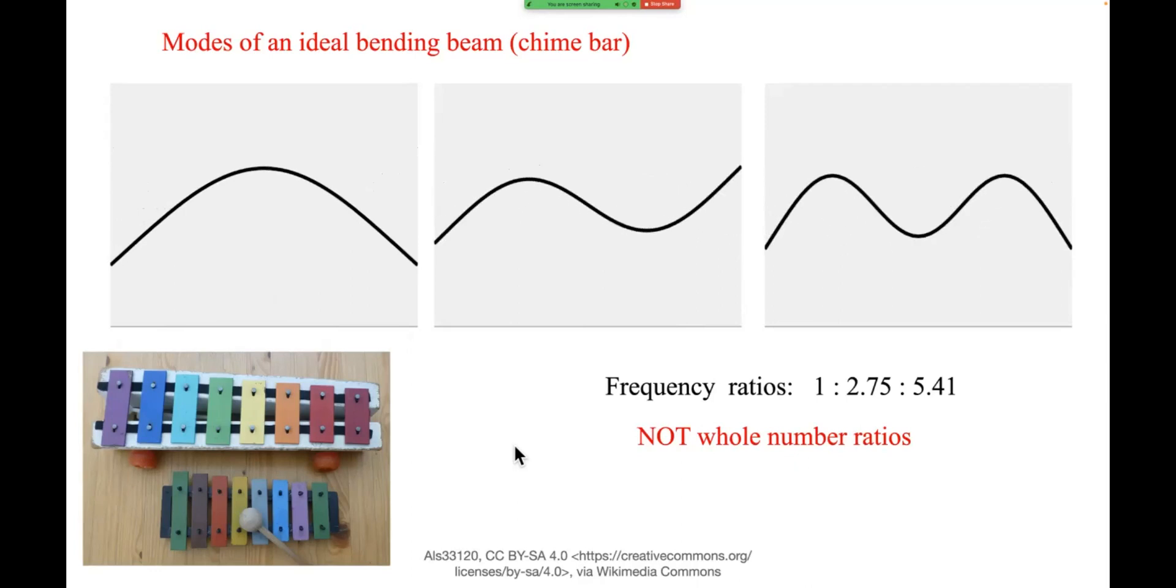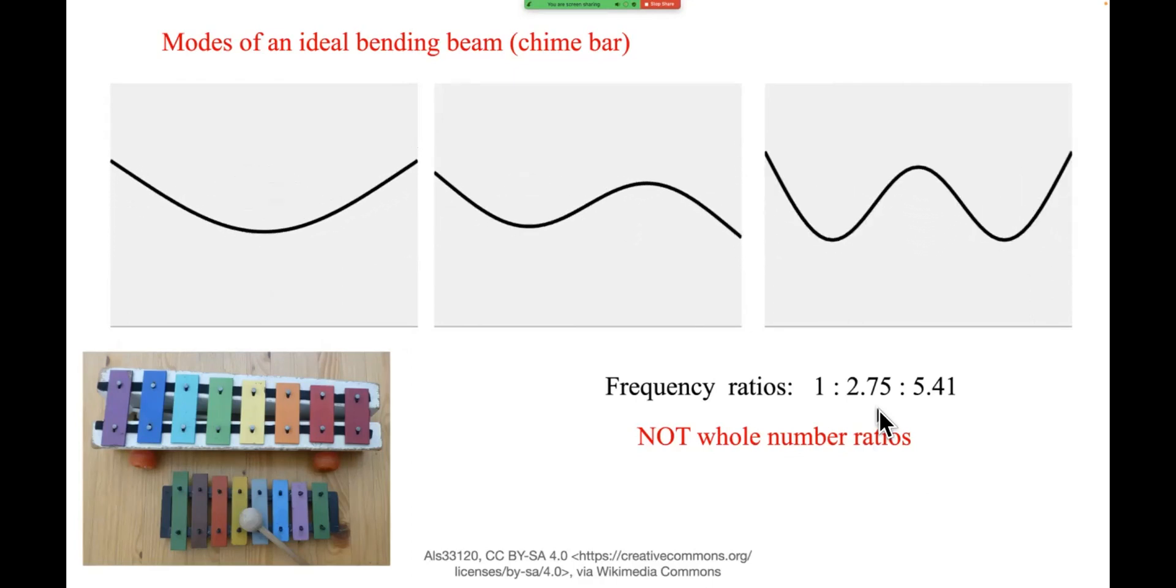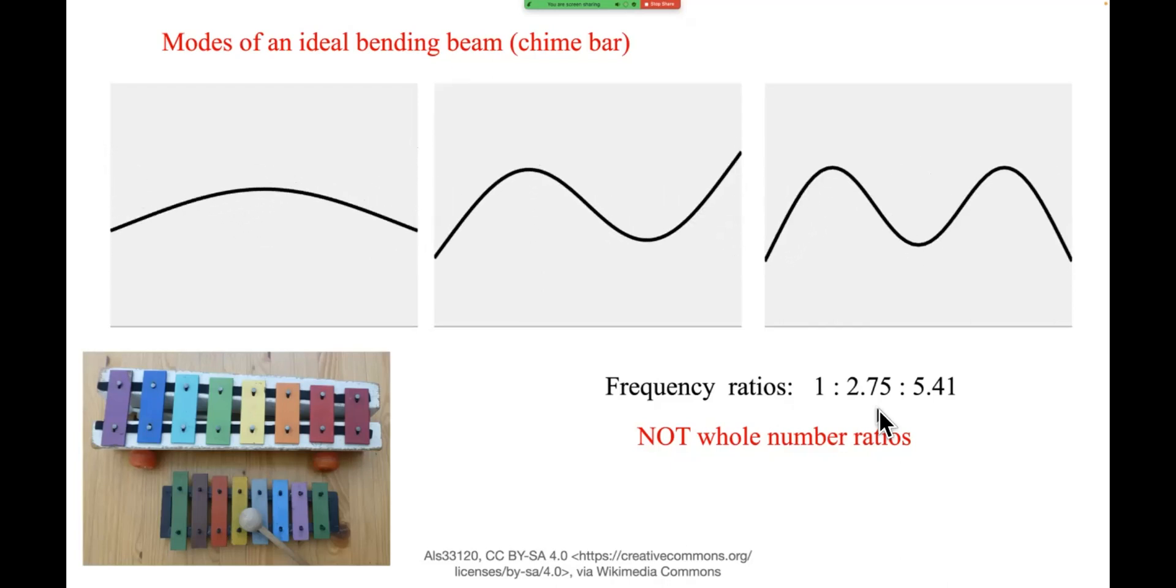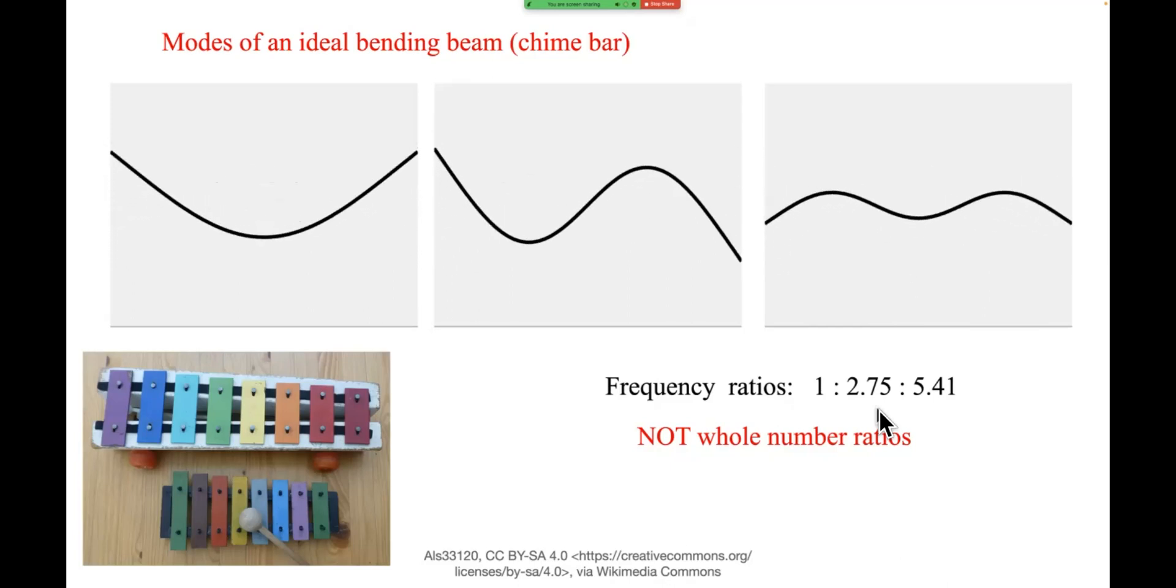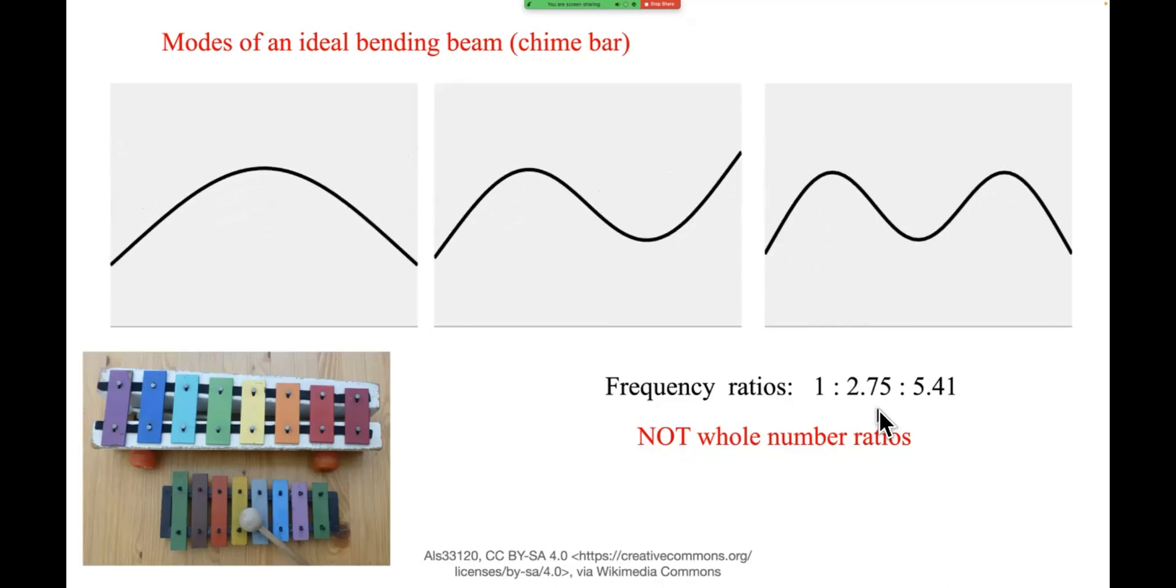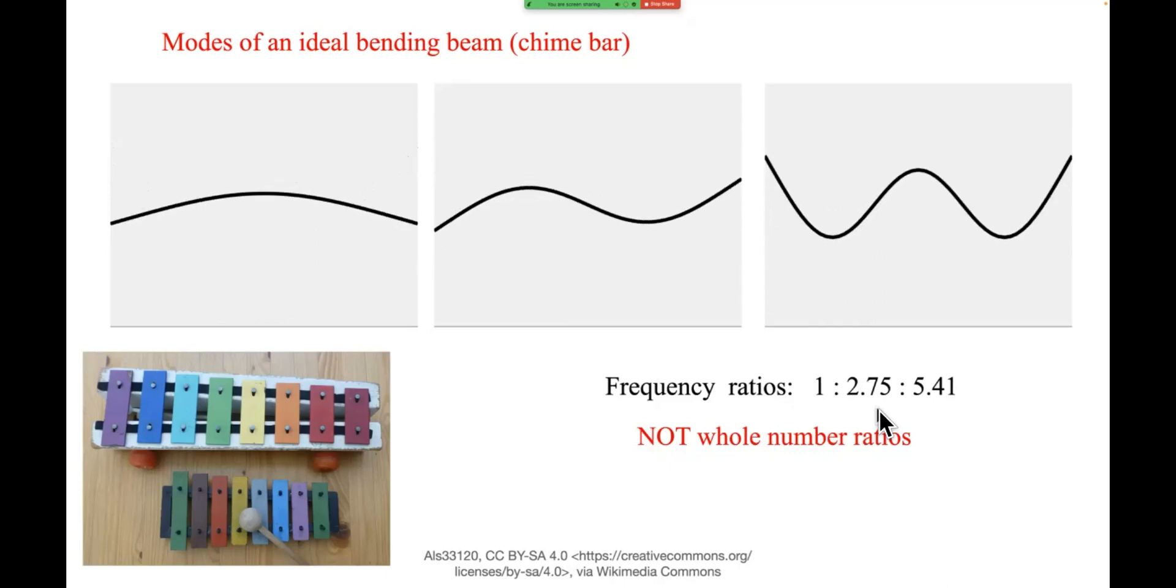Now the ratios of the frequencies of those three things are these numbers that are written down here. If we call the first one frequency one, then the second mode is two point seven five. The third mode is five point four one. Now the numbers don't matter except for one thing which is that they're not whole numbers. This illustrates something really important which people are often confused about. The modes of this little chime bar here, they are not harmonics. The different frequencies are not whole number ratios.